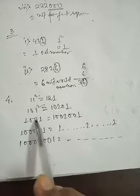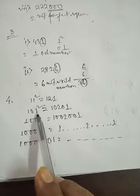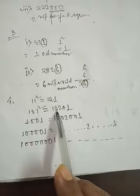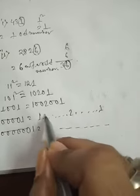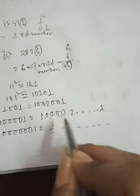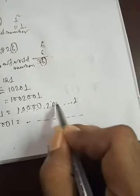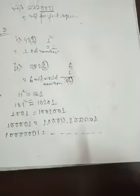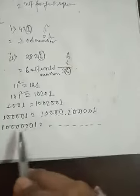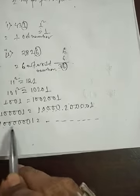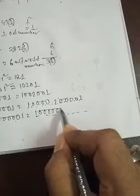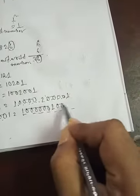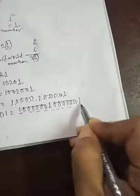If there is one zero between the ones then there is one zero around the 2. If there are four zeros between the ones, then we write four zeros here: 1, 2, 3, 4 on each side. Similarly, for six zeros, we write 1, 2, 3, 4, 5, 6 zeros, then 2, then 1, 2, 3, 4, 5, 6, then 1.